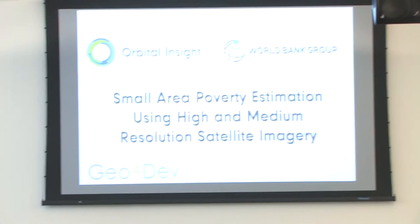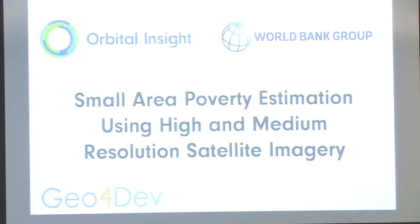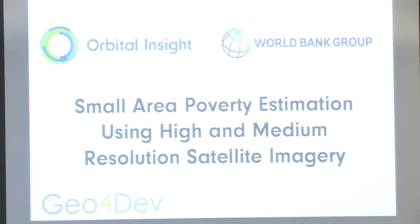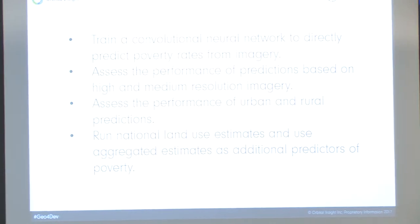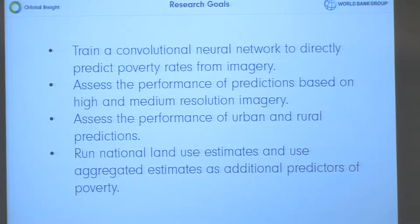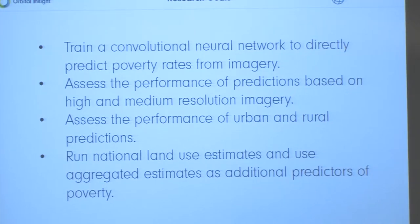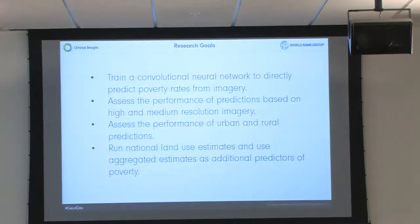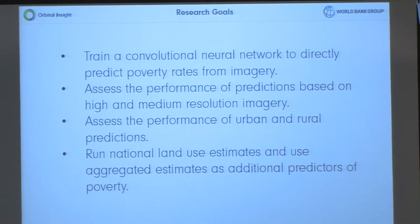We've been doing research with the World Bank Group, doing small-area poverty estimation using high and medium-resolution satellite imagery. We have a couple goals: we're trying to estimate poverty rates in Mexico, using census ground truth from the Mexican government to create a model that will directly produce poverty estimates. We're also experimenting with how medium-resolution and high-resolution imagery creates different estimates and how performance varies. We're also looking at how estimates differ in urban and rural areas, and we're doing land use estimation to use as additional predictors on top of the direct poverty estimates.